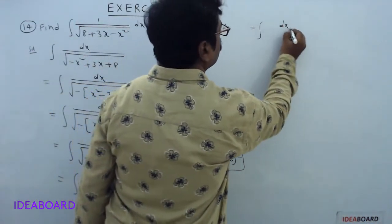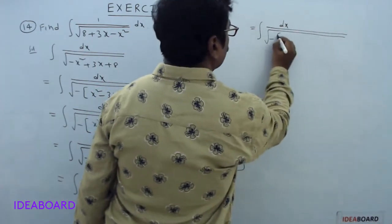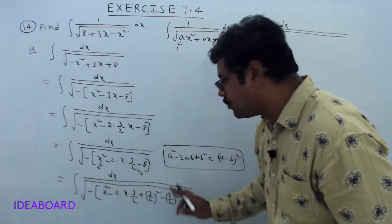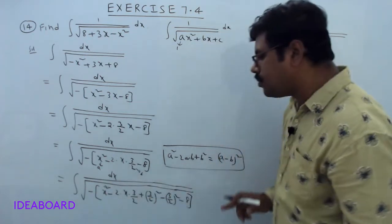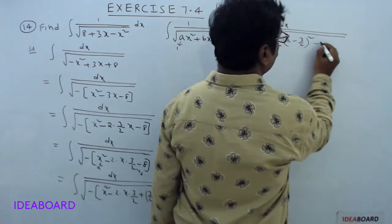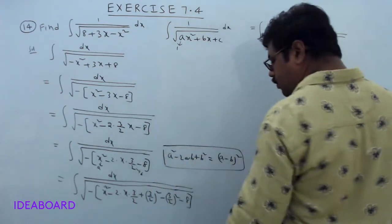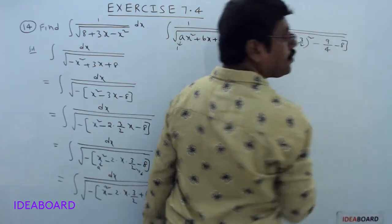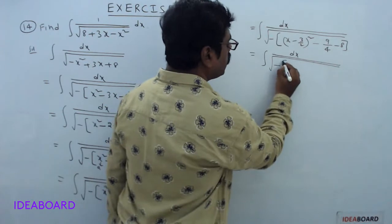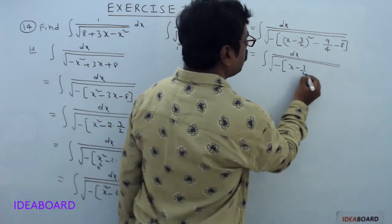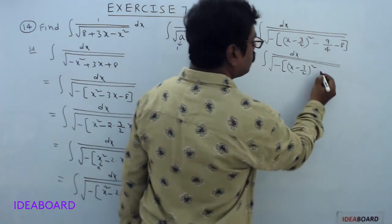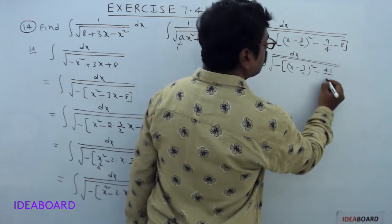This expression is of the form a² minus 2ab plus b². The combination of these three terms can be taken as (x minus 3/2)² minus (3/2)² minus 8, that is (x minus 3/2)² minus 9/4 minus 8. Taking LCM as 4: minus 9 minus 32 gives minus 41, so minus 41 divided by 4.